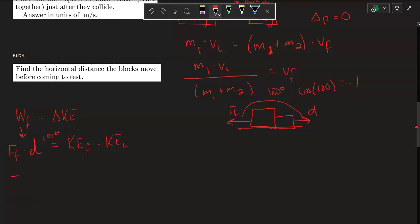So this will be negative. The force of friction times their displacement will equal KE final. They're going to come to a stop. So this is going to go to 0. This KE final is 0 minus the initial kinetic energy that the two are going to have.